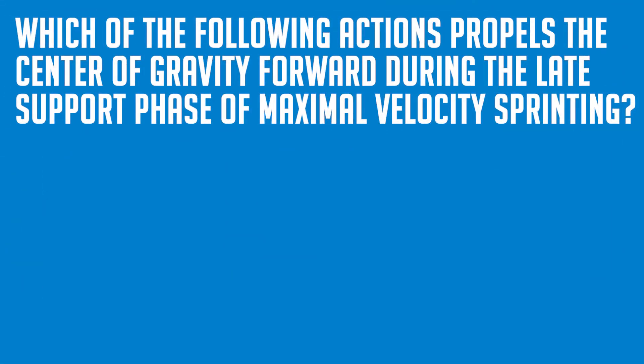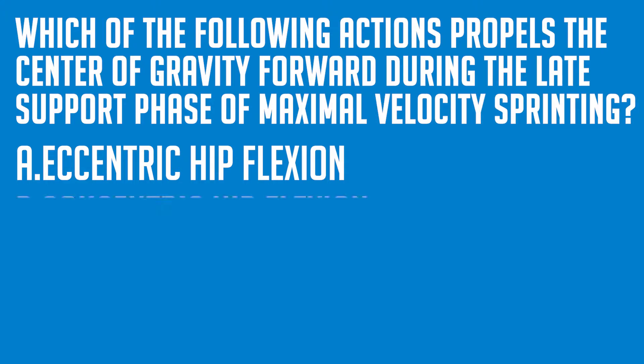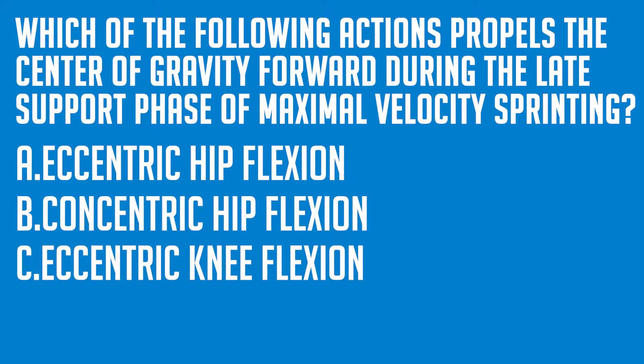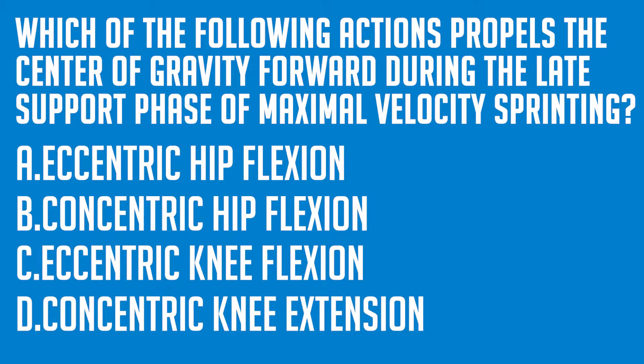Let's consider the following example. Which of the following actions propels the center of gravity forward during the late support phase of maximal velocity sprinting? A: eccentric hip flexion, B: concentric hip flexion, C: eccentric knee flexion, or D: concentric knee extension.